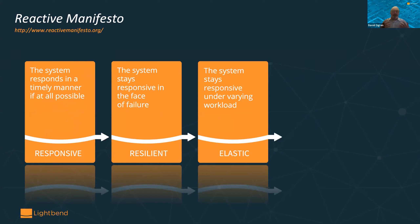These may sound completely obvious, but they have specific meanings in distributed computing. Responsiveness — it may sound like we've always wanted performant applications. But in a distributed environment where we're always waiting on requests from other services and databases, being responsive requires us to be asynchronous, because we can't spend all our time waiting.